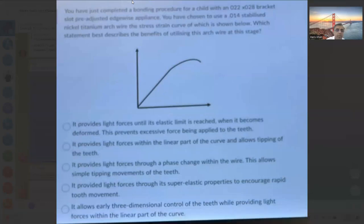This dual picture shows stress-strain. You have completed a bonding procedure for a child with a 0.022 bracket slot. You have chosen to use nickel-titanium wire, and the stress-strain curve is shown below. Frankly, this is more like a stainless steel curve than a nickel-titanium curve. This statement best describes the benefit of using this archwire at this stage. It provides light force until elastic limit is reached, when it becomes deformed. This prevents excessive force being applied to the tooth. Yes, that can be one option.